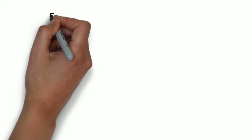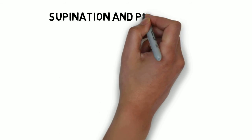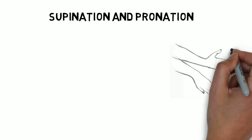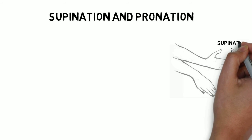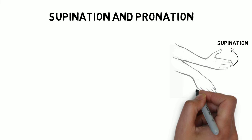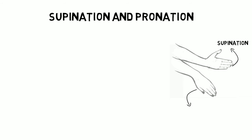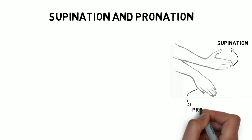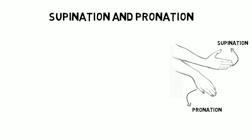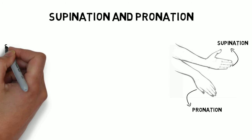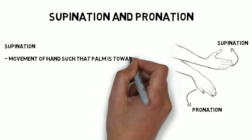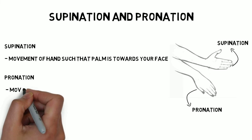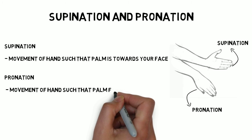Now, supination and pronation: supination is the movement of the hand such that your palm is facing towards your face, so you can directly look into your palm. When the palm is facing downward, it is called pronation.